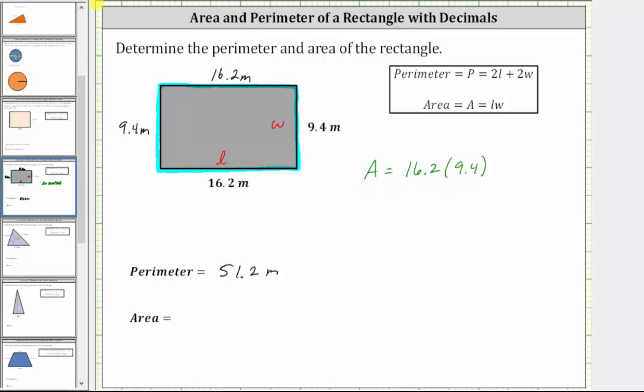Let's go ahead and find this product by hand. We have 16.2 times 9.4. Notice both factors contain one decimal place, and therefore the product will contain two decimal places.